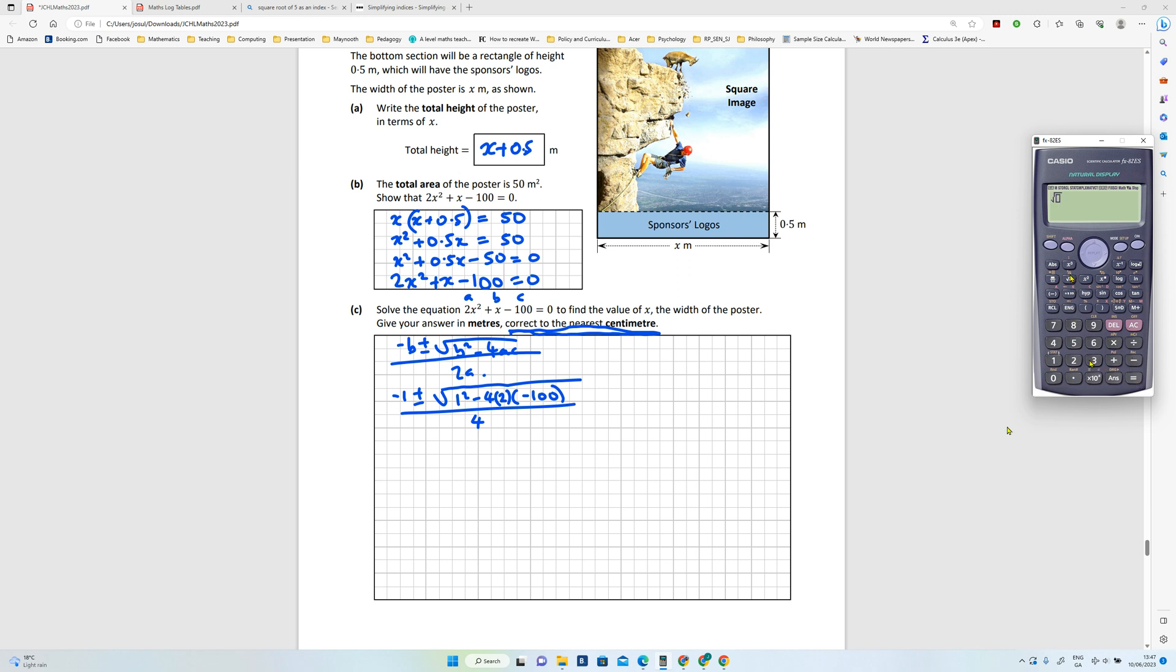Okay, so we'll put this into the calculator, and the root of one to be squared minus four by two by minus 100... So that's going to give you three root of nine and then 89.